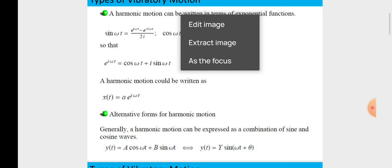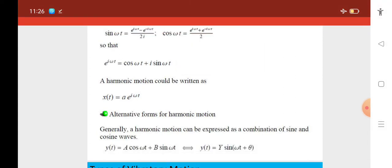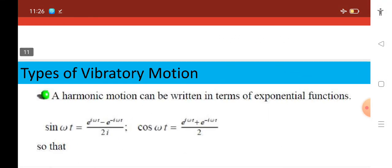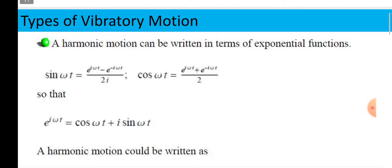Now, harmonic motion can be written in terms of exponential functions. Sin omega t equals e raised to i omega t minus e raised to minus i omega t divided by 2i. Cos omega t equals e raised to i omega t plus e raised to minus i omega t divided by 2. What is the basic difference here?